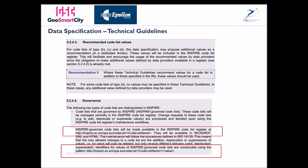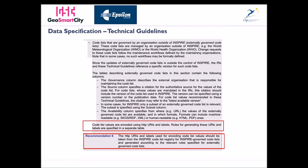As for governance, codelists are distinguished as INSPIRE-governed and governed by organizations outside INSPIRE. For INSPIRE-governed codelists, they will be made available in the INSPIRE codelist register at the URI inspire.ec.europa.eu/codelist/CodelistName, where the codelist name is in upper camel case — that is, multiple words joined together with the first letter of each word capitalized. Identifiers for values of INSPIRE-governed codelists are constructed using the pattern: inspire.ec.europa.eu/codelist/CodelistName/value.